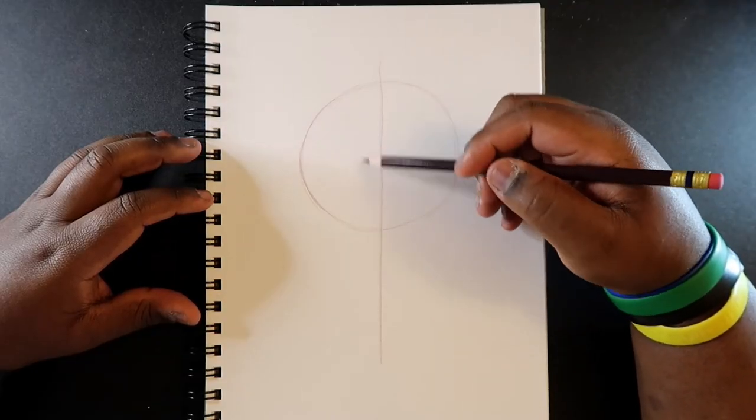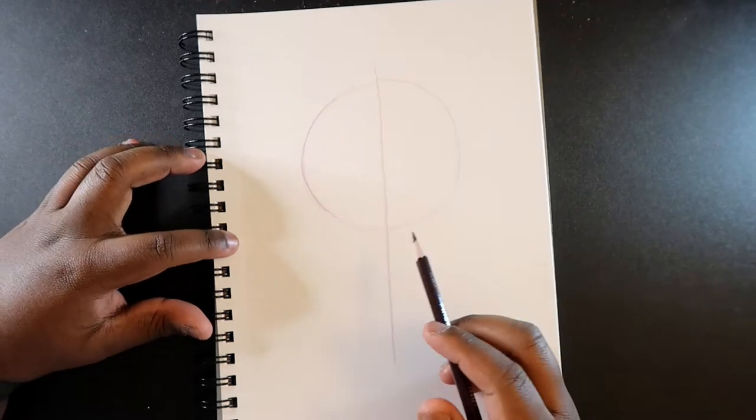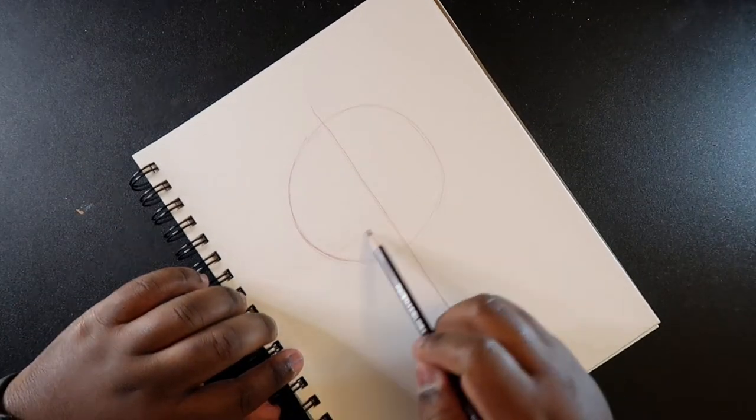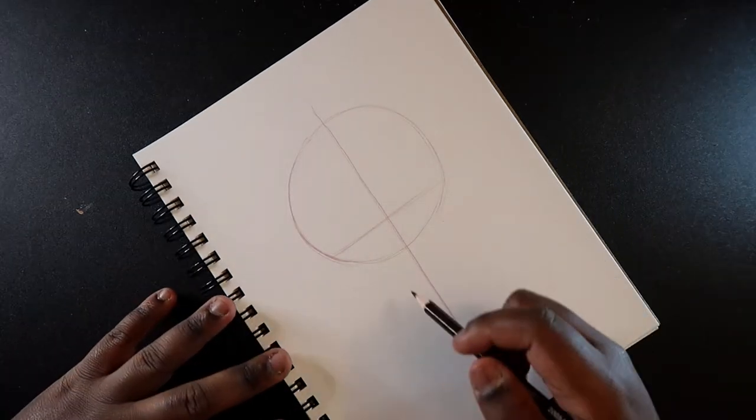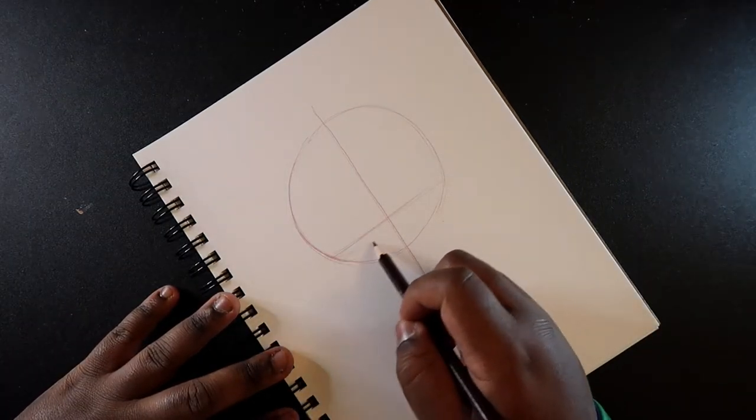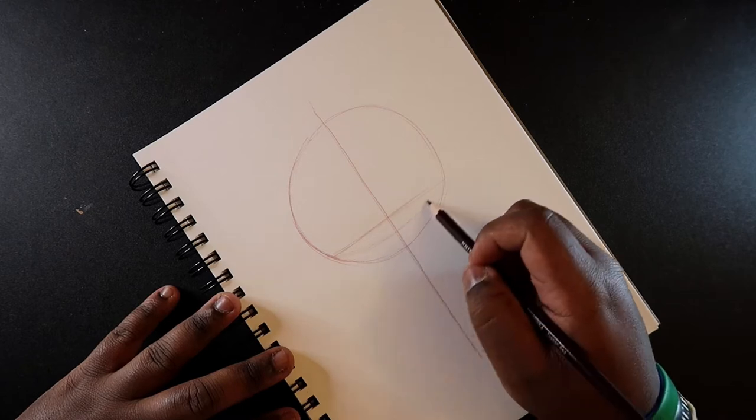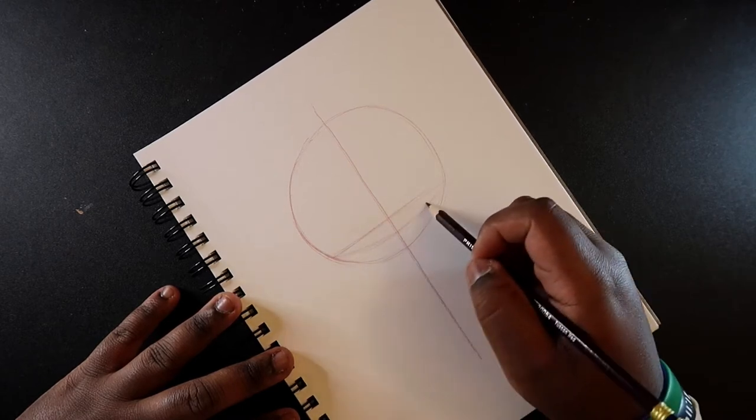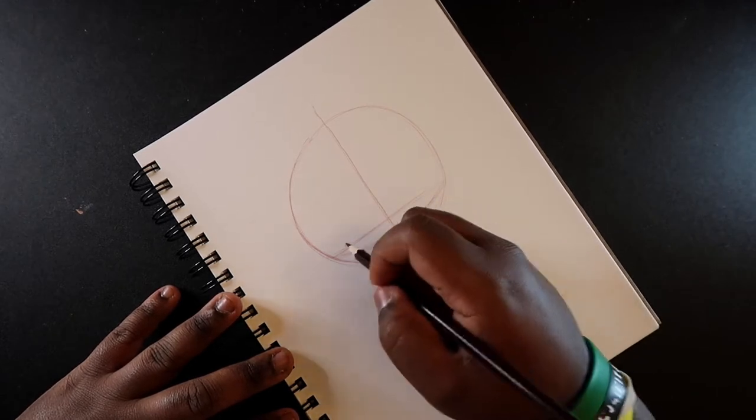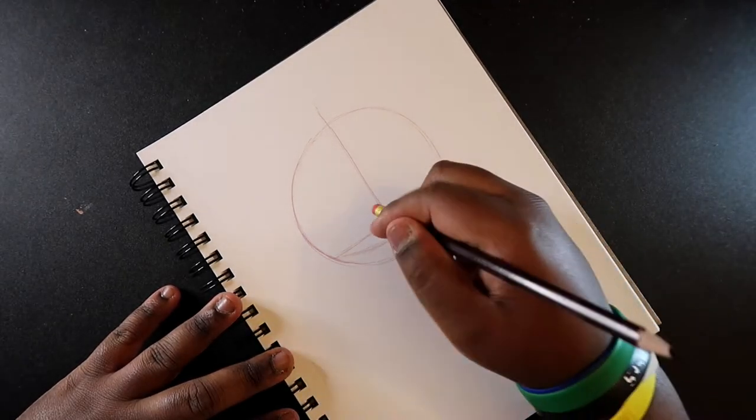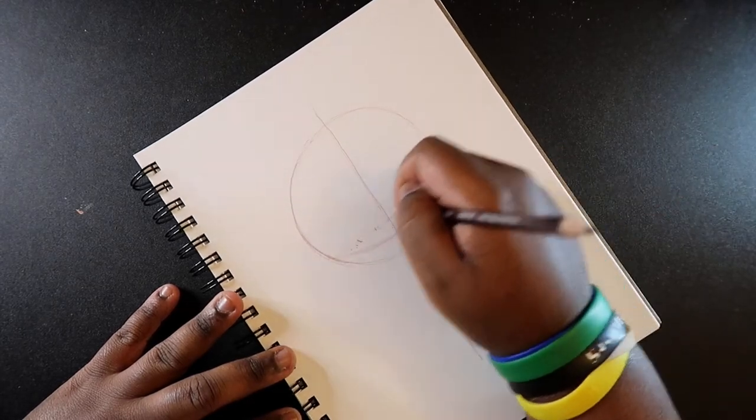About three quarters down from the circle we're going to draw another center line. I'm going to turn my paper so I can do that. This is where the eyes are going to rest. I'm going to make this line a little bit distorted and facing downward. Instead of using this straight line we're going to use this line that we just drew here. We can erase this one instead.